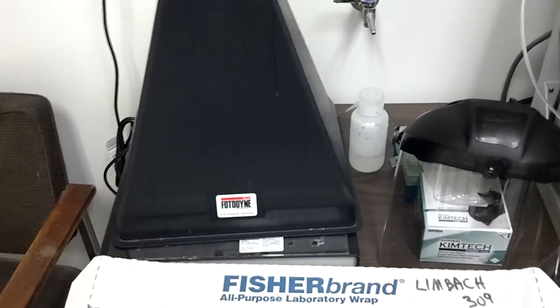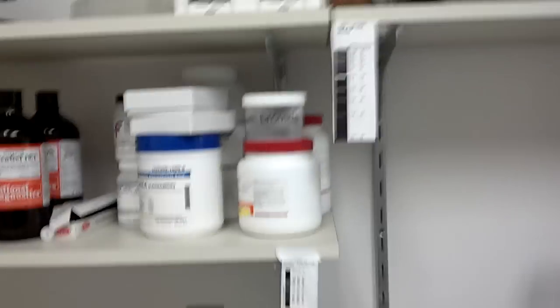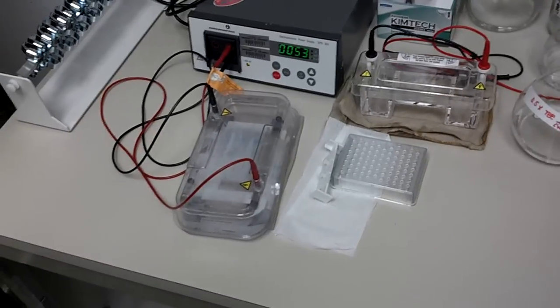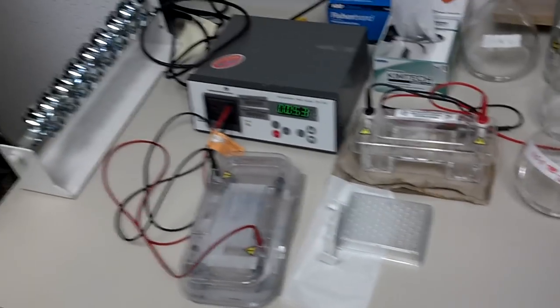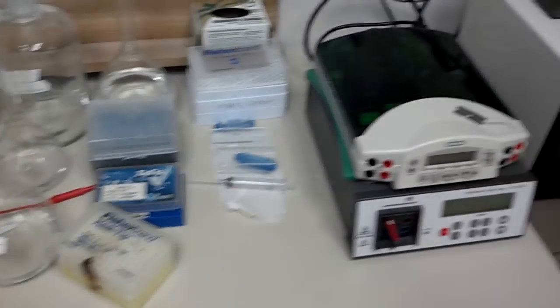This is our gel room, gel electrophoresis. This is our dark light. Once we get our gels and run, we put them on here to see where exactly our proteins are at. It's reagents. This is the gel electrophoresis. This one we commonly use to determine if our proteins are clean or if our oligonucleotides are separated.